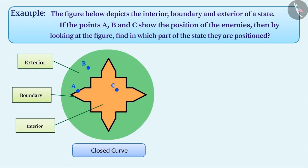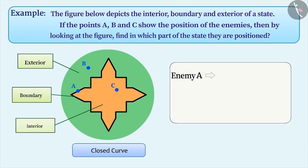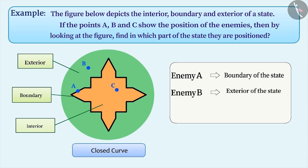In this way, we can say that point A is on the boundary of the curve, point B is in the exterior of the curve, and point C is in its interior. Therefore, enemy A is situated on the boundary, enemy B is at the exterior, and enemy C is inside the state.